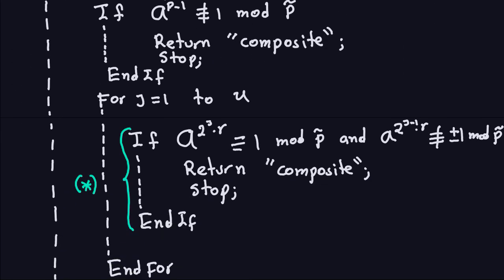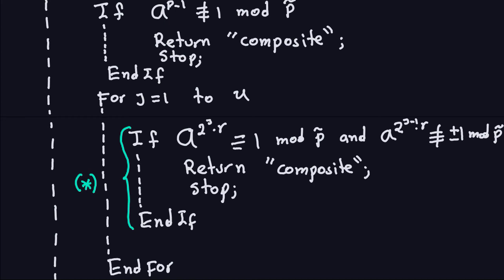Looking at that inner for-loop: j runs from 1 to u, where u is the exponent of 2 in the factorization of P-hat minus 1. You compute A to the 2^j times r using the square-and-multiply algorithm. If this is congruent to 1 modulo P-hat and the previous value A to the 2^(j-1) times r is not congruent to plus or minus 1 modulo P-hat, then you return composite and stop.